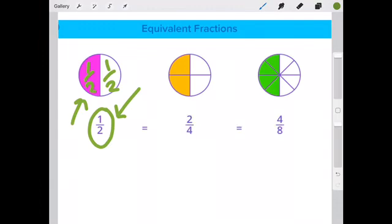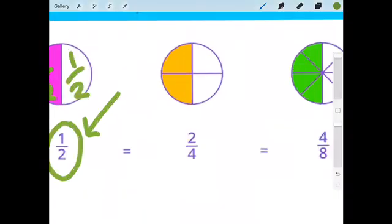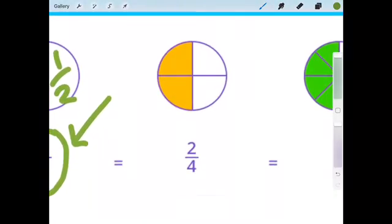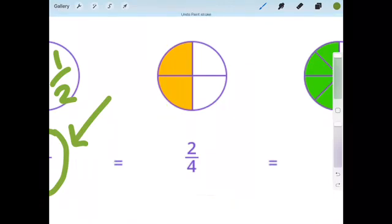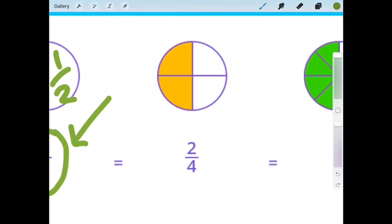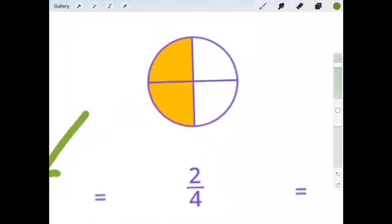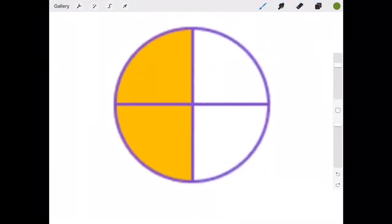Now let's go over to the orange pizza. Let's say there are four of you and you all want an equal share. You can see here that there is one, two, three, and four parts to this particular picture or fraction. Now if I was going to write in this, in each section, because there are four parts, I will put four on the bottom.